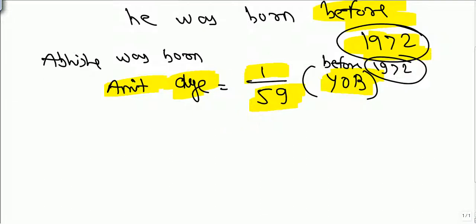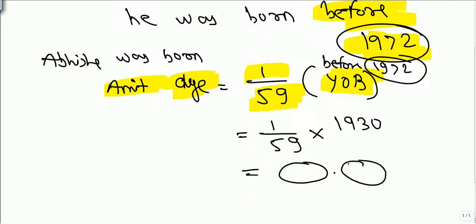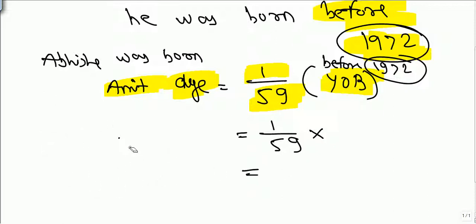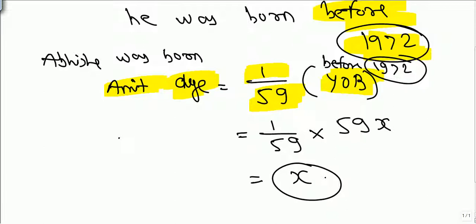If Amitabh's year of birth is not a multiple of 59 — say 1930 or something — when Abhishek is born, Amitabh's age will come out as some years point something. The problem is, if Amitabh's year of birth is 1930, his age when Abhishek is born would be something point something, and Abhishek's year of birth would come out as a non-integer. A year of birth cannot be a decimal.